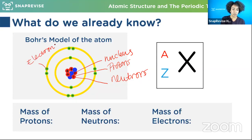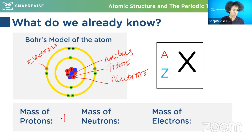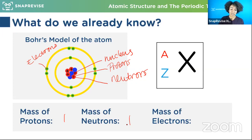We need to know what the mass of all of these things are. Does anyone remember the mass of protons and neutrons? Yes - one for protons, one for neutrons - wicked. And for electrons, you guys are getting all the exact figures. You don't really need the exact figure for electrons in your exam - you just need to be able to say that it's negligible, meaning it's so small we don't think about it.